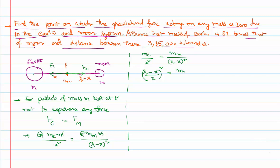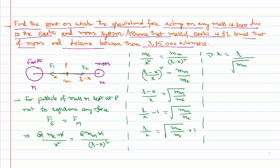Taking the square root on both the sides, we get r by x minus 1 equal to root of mass of the moon divided by mass of the earth. So r by x equal to root of mass of the moon divided by mass of the earth plus 1. Bringing outside the square root, mass of the moon divided by mass of the earth plus 1 outside the square root.